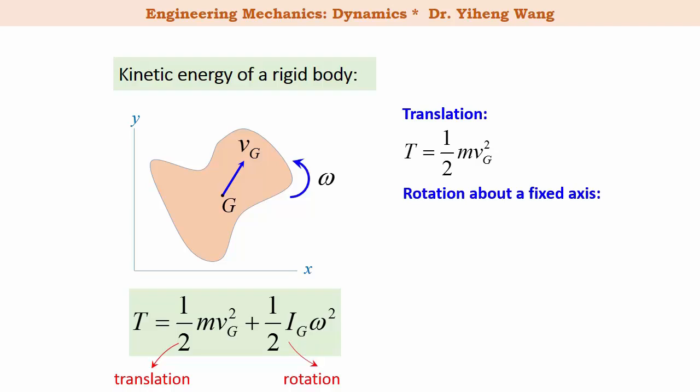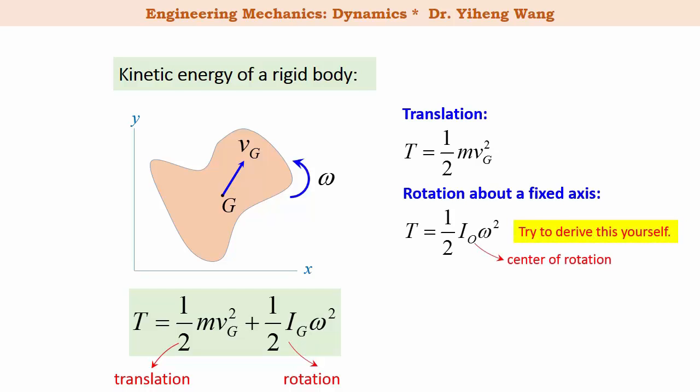For rotation about a fixed axis, the general equation also applies, but we can rewrite it as T equals one-half IO omega squared, where IO is the mass moment of inertia with respect to point O, the center of rotation. IO can be determined through the parallel axis theorem from IG, the mass moment of inertia about the gravitational center.